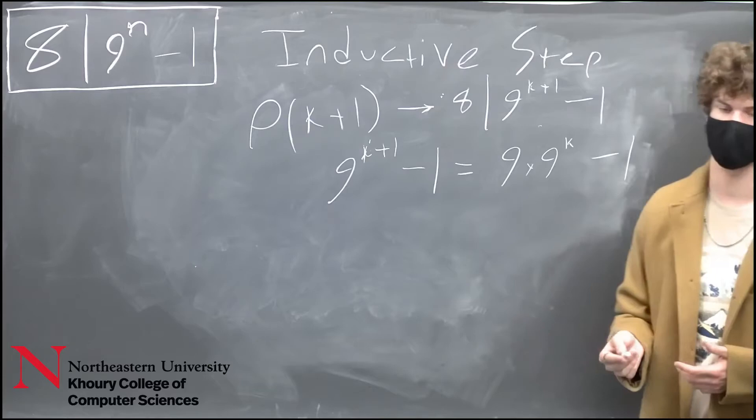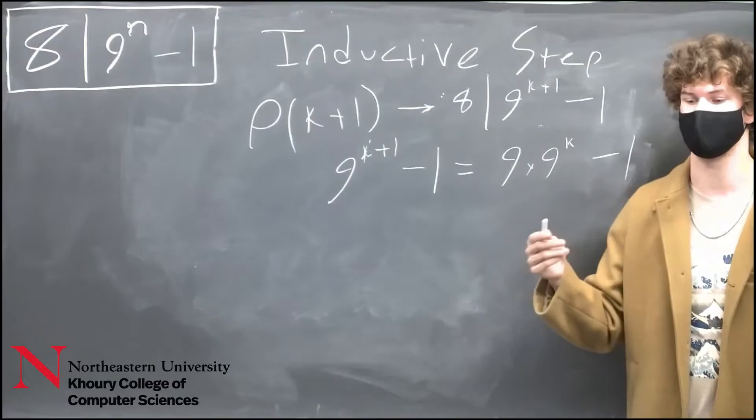According to our hypothesis, by definition of a multiple, we can substitute any 9 to the k minus 1 with 8n. So we have a 9k right here.